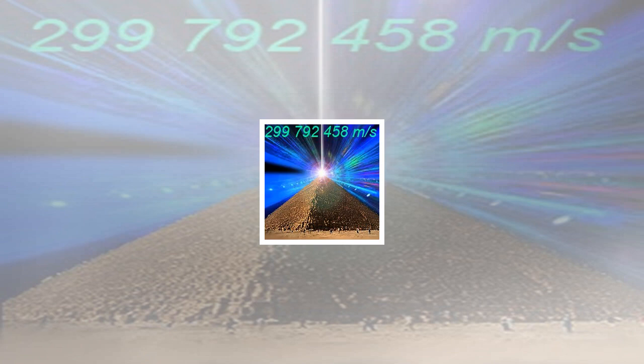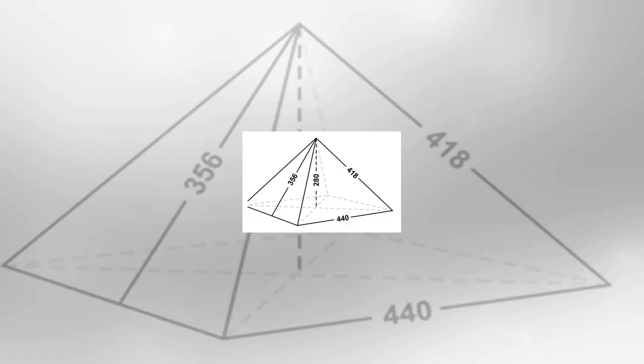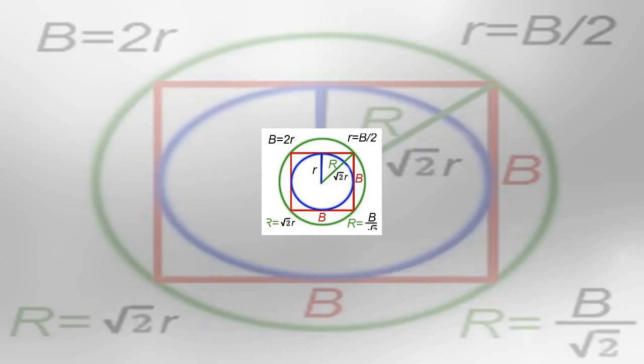Base of the Great Pyramid is a square with side B=440 royal Egyptian cubits. Let's draw two circles: one inscribed and one superscribed on the square of the base. The difference of the circumference of both circles, let's call it C, equals 1.301290285 times B. The length of the Egyptian royal cubit based on the pyramids and temples of Giza by W.M. Flinders Petrie, 1883.